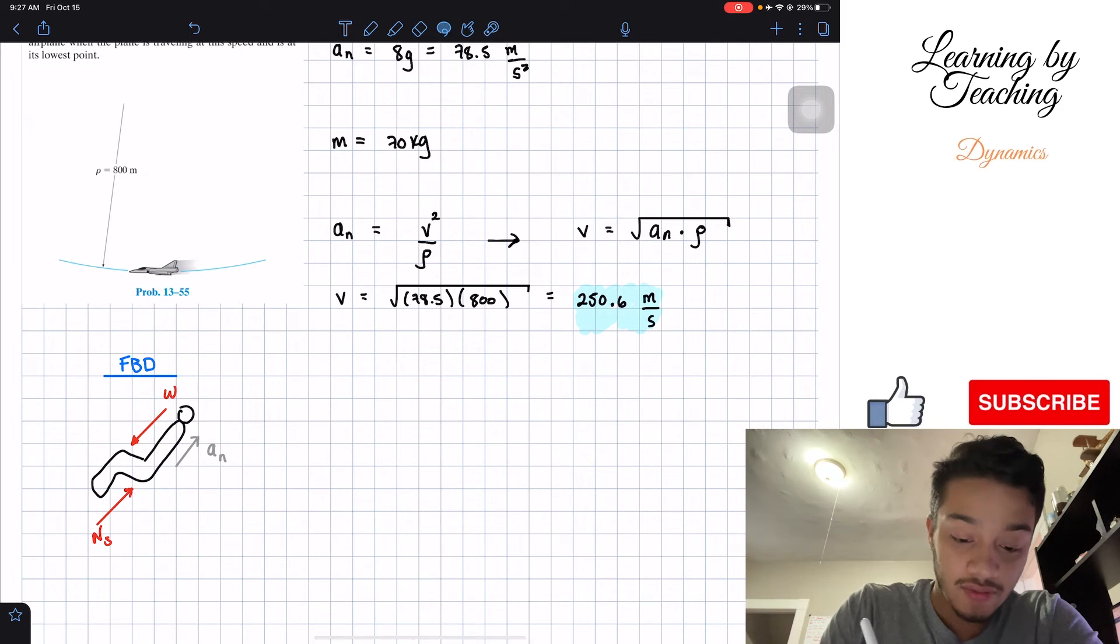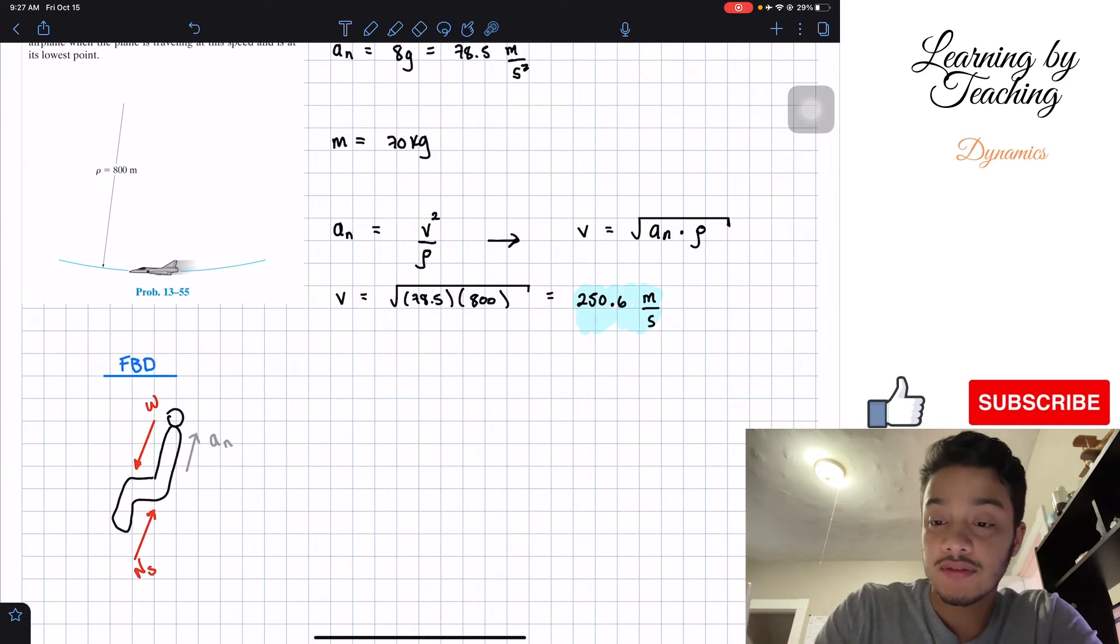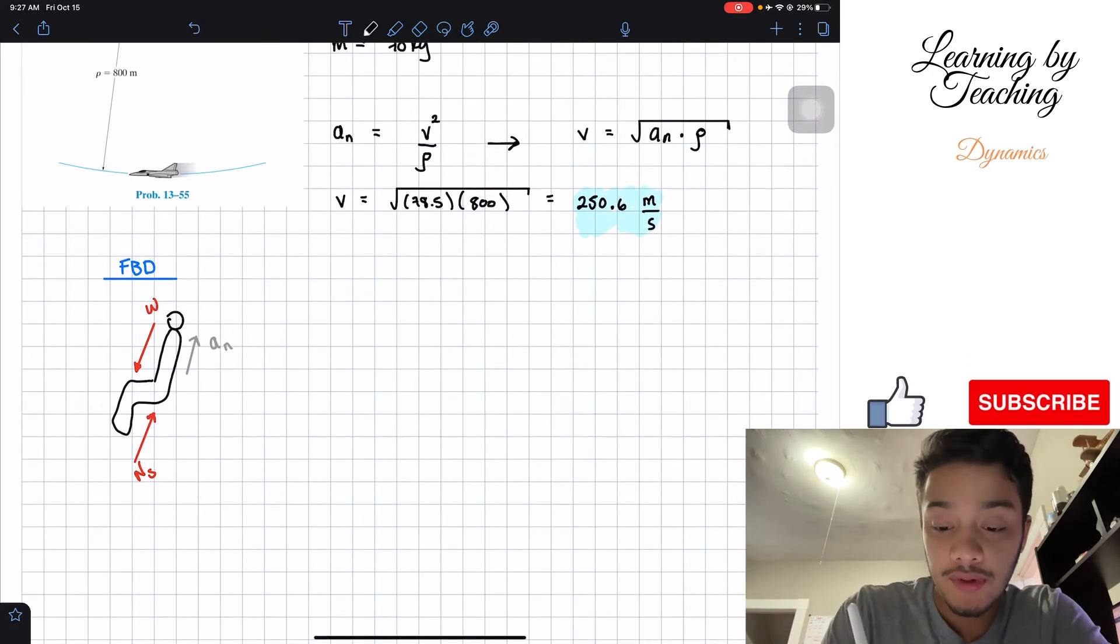The last thing I'm going to draw in this free body diagram is that we have our normal acceleration going in this direction. I draw my guy a little bit inclined, and it should look something like this, just following the radius in this direction. So, that's my normal direction.